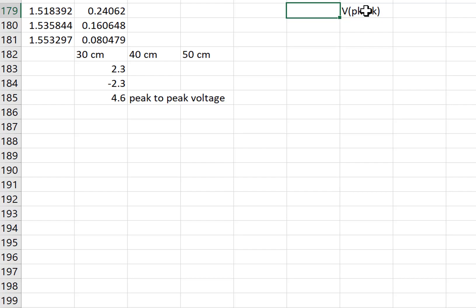Actually, you're not going to do drop height, you're going to do velocity. So for my 30 centimeter drop height, I got a peak to peak voltage of 4.6. The drop height was 30 centimeters, and so I need to figure out what velocity that is using my kinematics equations.